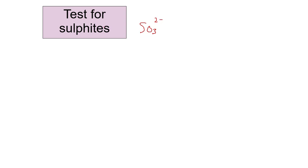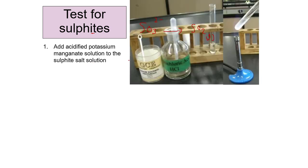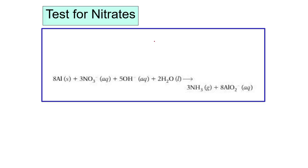The next anion is sulfite, SO3 2−. Take care — sulfate is SO4 and sulfite is SO3. The test for sulfite involves production of SO2 gas (sulfur dioxide), which turns purple potassium manganate colorless. We add acidified potassium manganate solution to the sulfite salt solution. The purple color of KMnO4 turns colorless, giving a positive result.